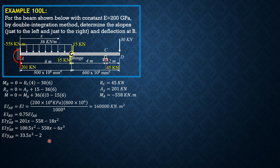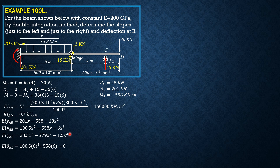Integrating again: EI y_AB equals 33.5x cubed minus 279x squared minus 1.5x to the fourth. Setting x equal to 6, we compute theta at B just to the left: EI times theta_B_left equals 100.5 times 6 squared minus 558 times 6 minus 6 times 6 cubed.